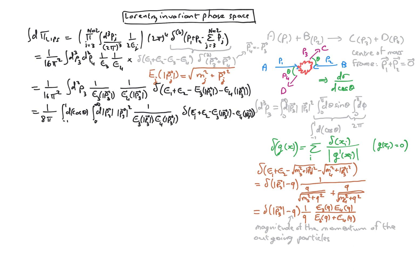So we are now able to write the integral over the Lorentz invariant phase space. Recalling the expression for the cross section, we get the differential cross section we were looking for.